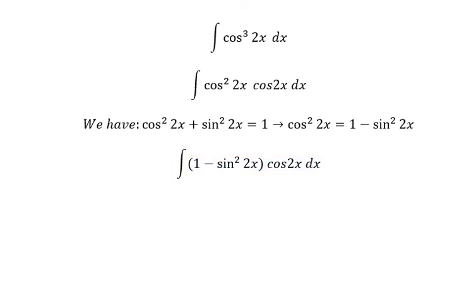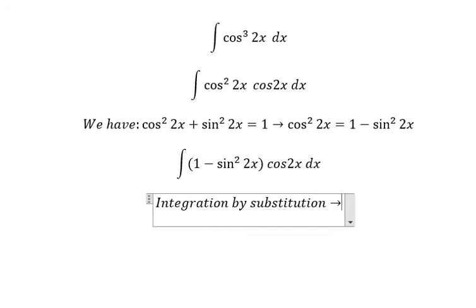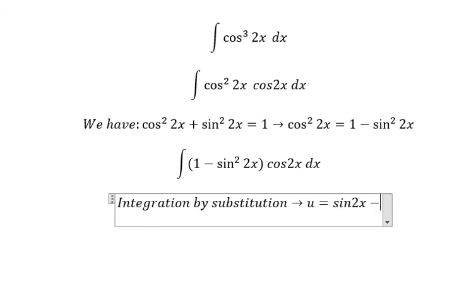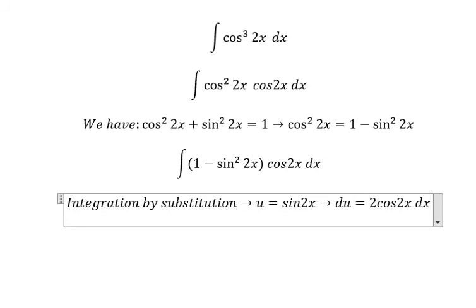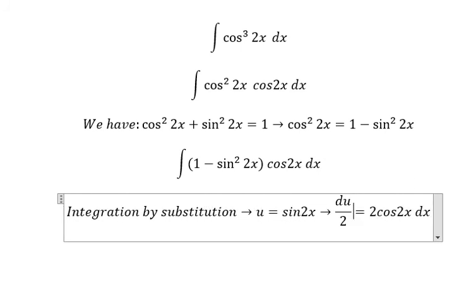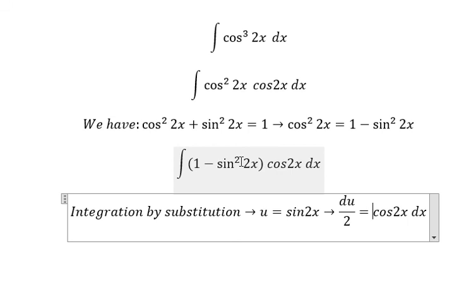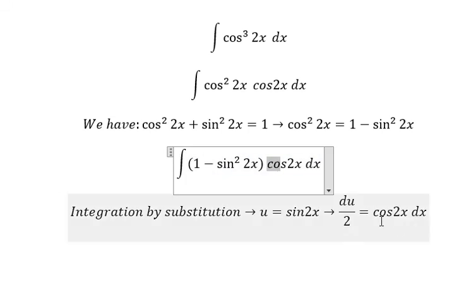Next, we need to use integration by substitution. So we put u equals to sine 2x, du you got about 2 cosine 2x dx. Later we divide both sides with number two because we don't have number two in here. That's why we need to divide both sides with number two.